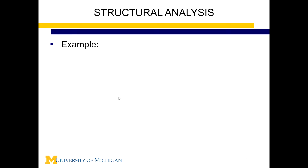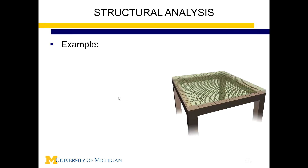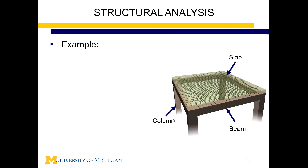Let's look at a basic example: a one-slab, one-bay, one-story building with one slab, four beams, and four columns. The slab is the plate we move on; it takes our load and distributes it to the beams on the edges. The beams then transfer the loads to the columns, the columns transfer it to the footings, and the footings transfer it to the ground.